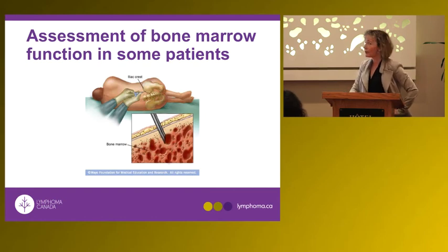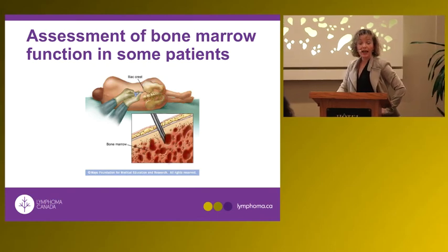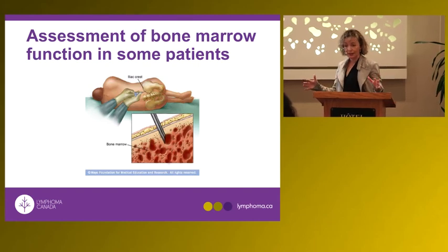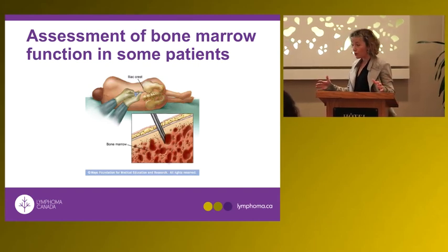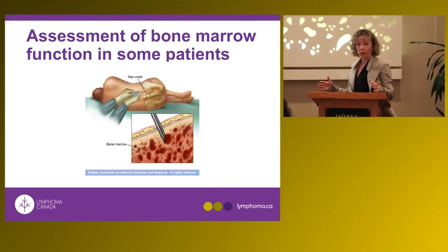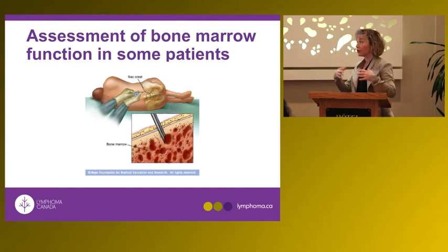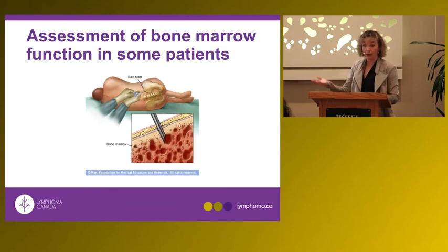Some patients need a bone marrow biopsy. We don't routinely perform bone marrow biopsies in CLL, but in patients with profound anemia or thrombocytopenia we want to distinguish whether this is a production problem — too many CLL cells in the marrow — or a destruction problem, where there aren't that many CLL cells in the marrow but they are being destroyed in the periphery by an autoantibody.